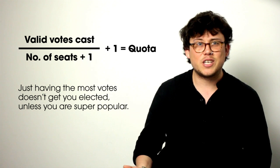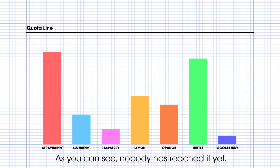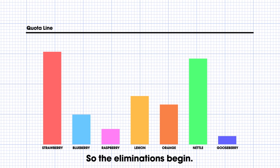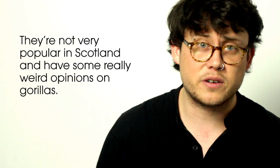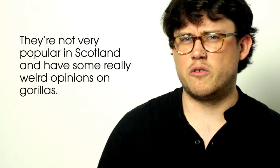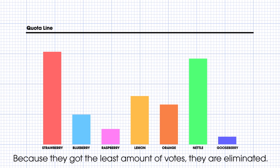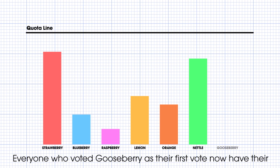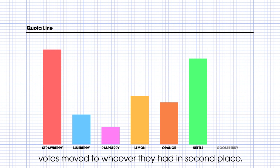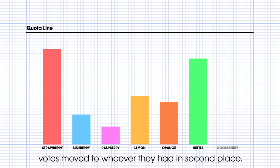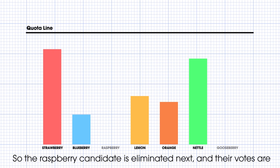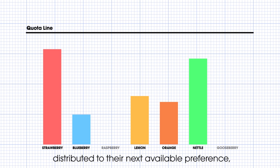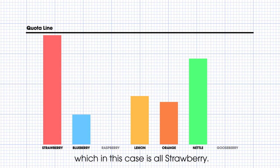Just having the most votes doesn't get you elected, unless you are, like, super popular. As you can see, nobody has reached it yet, so the eliminations begin. With the least amount of votes is this weird little purple party on the end, the gooseberry party. They're not very popular in Scotland, and they've got some really weird opinions on gorillas. Because they got the least amount of votes, they are eliminated. Now, this is where those second preferences come in — everyone who voted gooseberry as their first vote now have their votes moved to whoever they had in second place. Still, nobody is over the quota line, so the raspberry candidate is eliminated next, and their votes are distributed to their next available preference, which in this case is all strawberry. Still not over the quota line though, so blueberry is next to go.